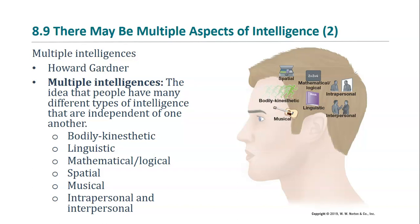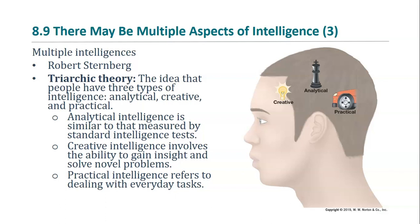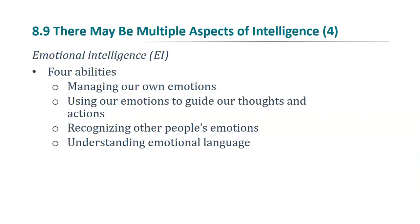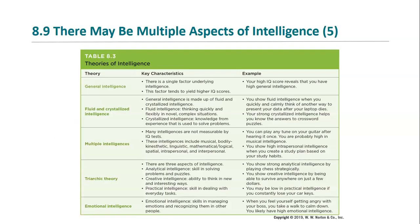The Harvard psychologist Howard Gardner suggested there are multiple types of intelligence beyond the traditional ones. Robert Sternberg, who developed his theory at Yale, suggests there are three types: analytical intelligence, which standard tests measure; creative intelligence, the ability to solve novel problems; and practical intelligence, our ability to deal with everyday tasks, sometimes known as street smarts. Emotional intelligence refers to our ability to understand and manage our emotions, as well as recognize other people's emotions and emotional language. The various types of intelligence are summarized in Table 8.3.